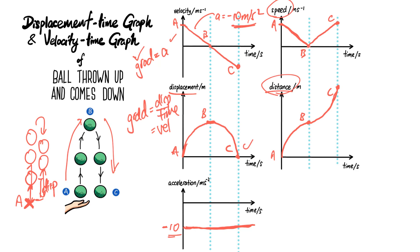For the last part, let's talk about the area underneath a velocity-time or speed-time graph. For example, if you throw the ball up to a maximum height of 2 meters, that corresponds to the area underneath the velocity-time graph from A to B. Coming back down, the area from B to C also corresponds to 2 meters. So on the distance-time graph, the total distance at point C will be 4 meters.